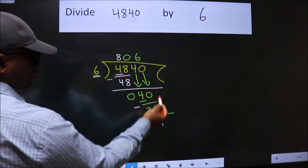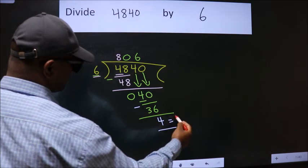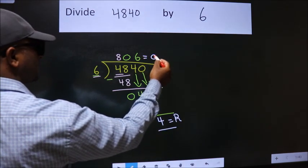No more numbers to bring it down. So, we stop here. This is our remainder. This is our quotient.